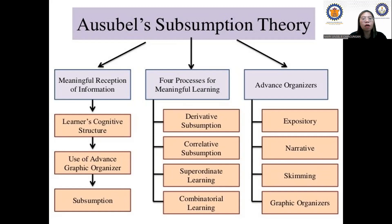We will also talk about the four processes for meaningful learning: derivative subsumption, correlative subsumption, superordinate learning, and combinatorial learning. And for advanced organizers, we will look at expository, narrative, scheming, and graphic organizers.